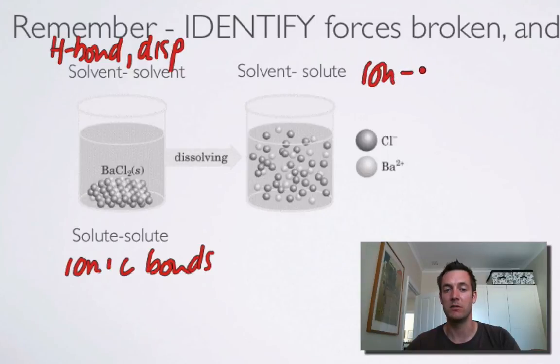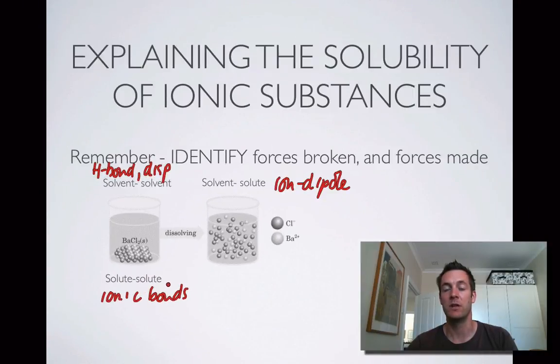And then what solvent-solute forces do we make? Well, that's precisely these ion-dipole forces. So how do we explain that barium chloride or lots of other ionic substances are very soluble in water, not without exception, but most? Well, we can say that the ion-dipole forces that are formed between the ions and the water molecules are strong enough to make up for the fact that we've broken strong ionic bonds in the solute and quite strong hydrogen bonds between solvent particles. So once again, it's that systematic sort of explanation saying what forces we've made, what forces we've broken, actually being precise about that and making a comparison between the two. So that hopefully explains a little bit why things with very strong bonds can actually dissolve.